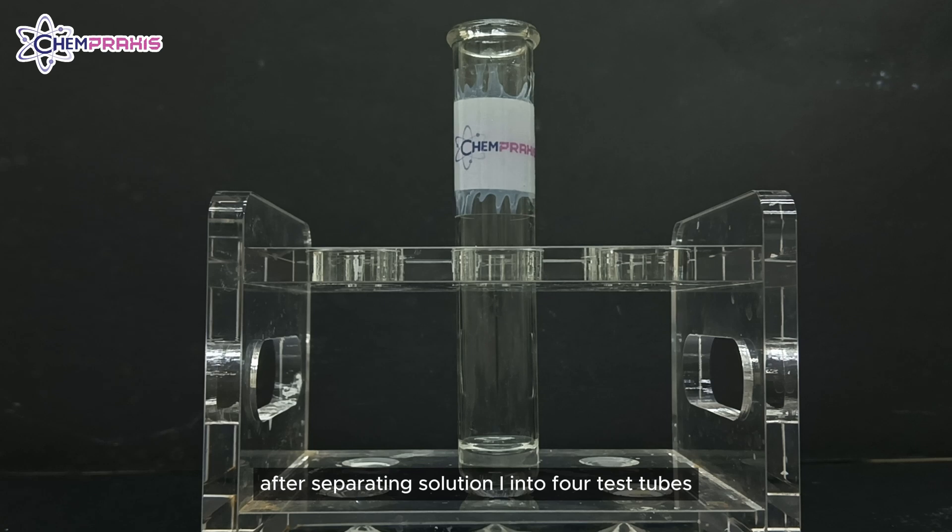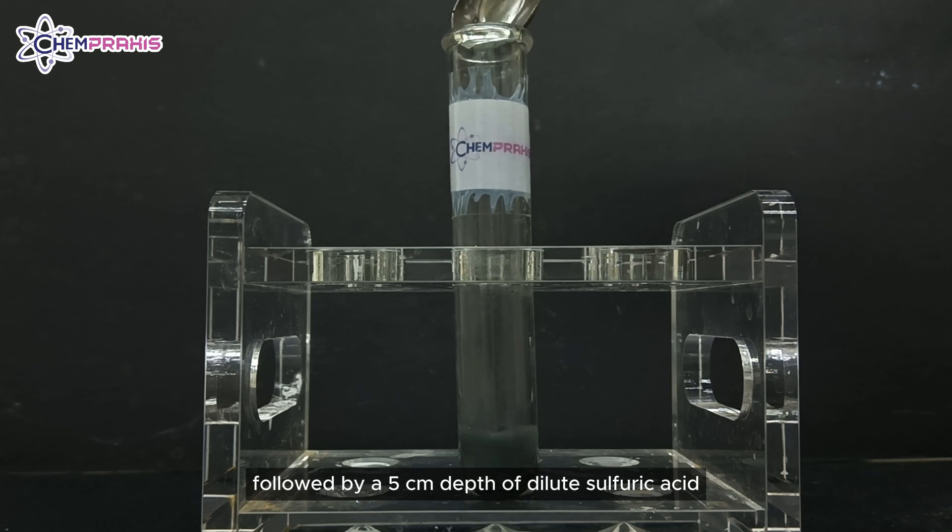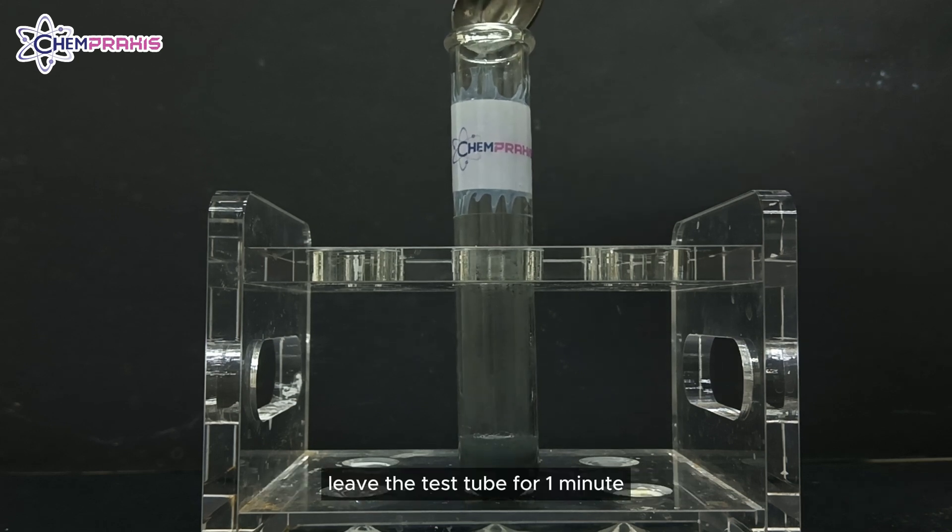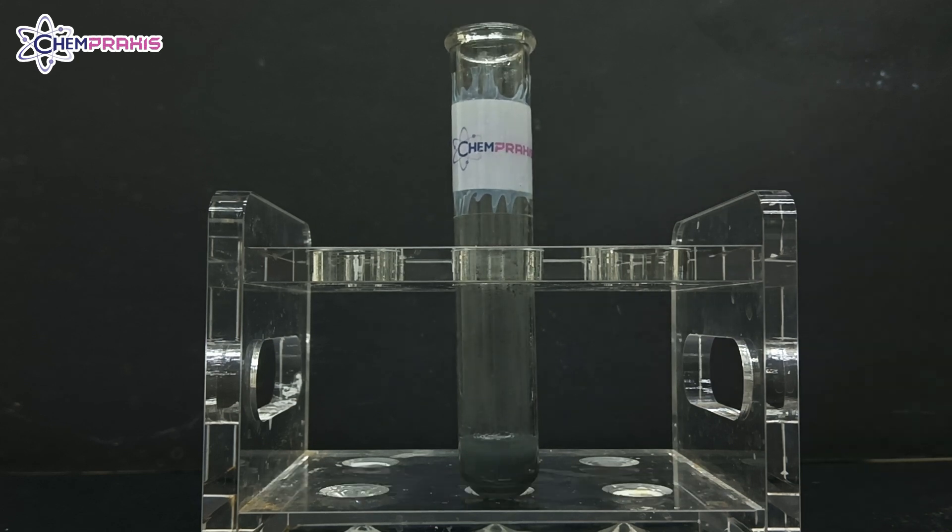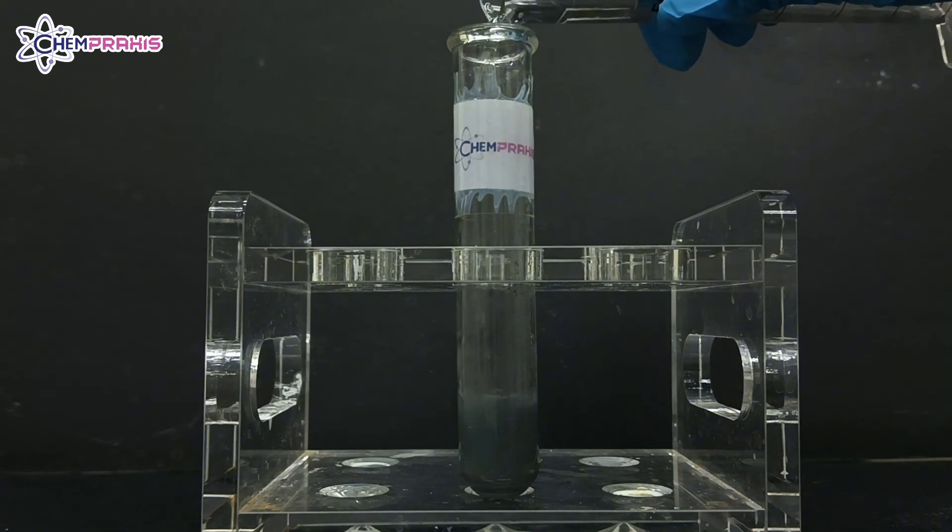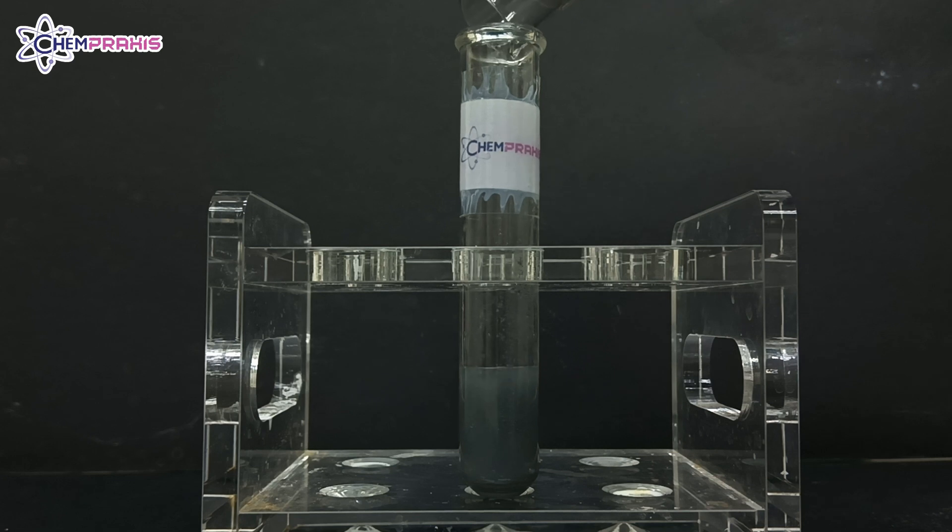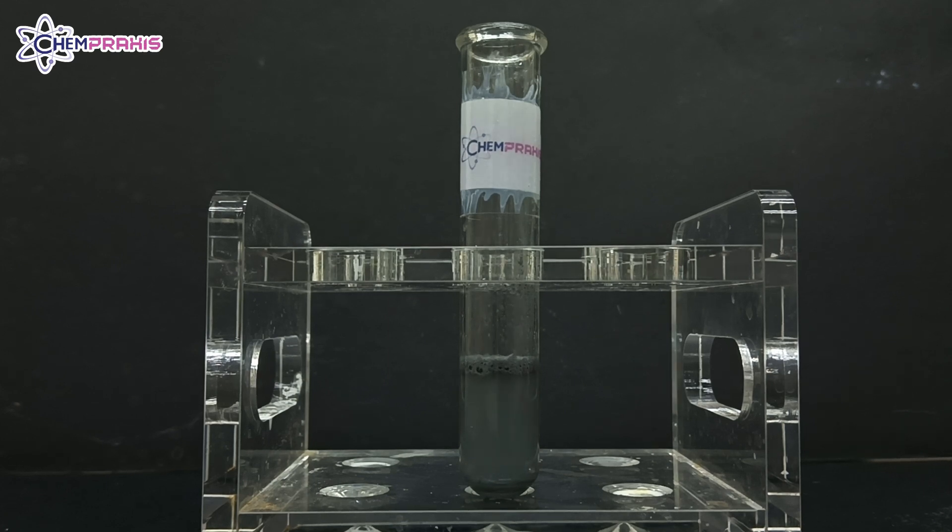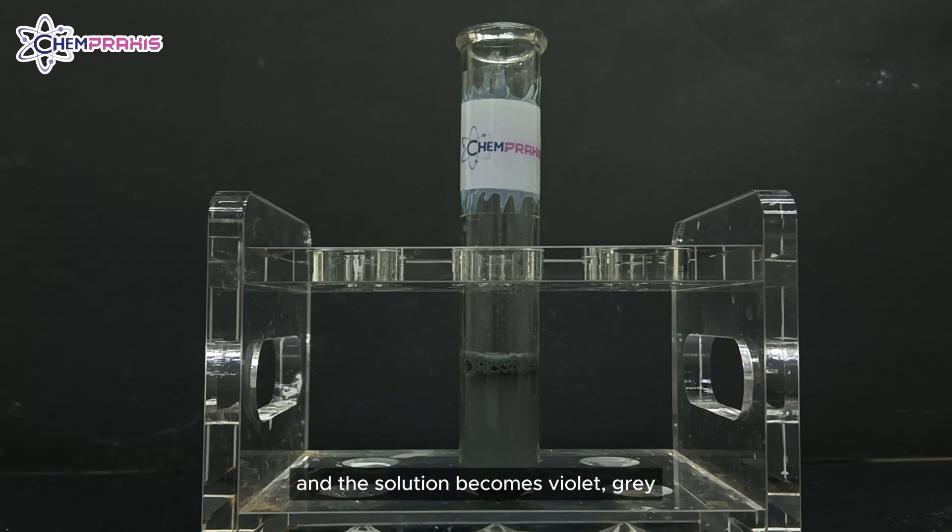After separating solution I into 4 test tubes, add a spatula of zinc powder, followed by 5 cm depth of dilute sulphuric acid. Leave the test tube for 1 minute. Fizzing can be seen and the solution becomes violet grey.